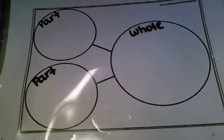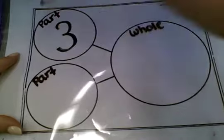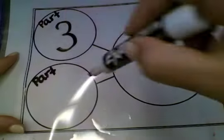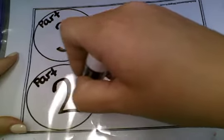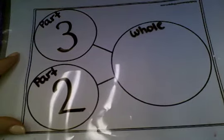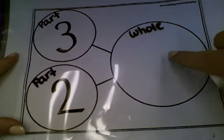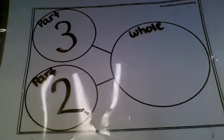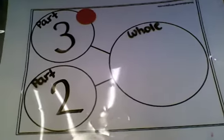So if we had three in this part and two in this part, our question would be, how many do we have altogether? We're looking for the whole. We can use our counting chips to help us solve these. I'm going to put three chips here.